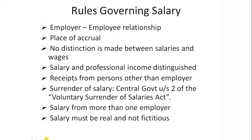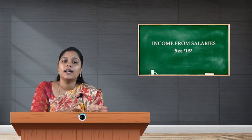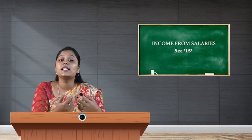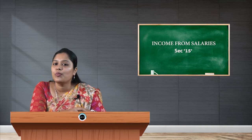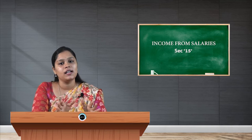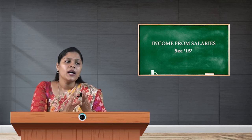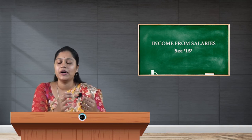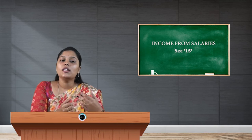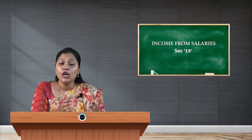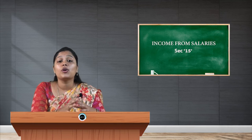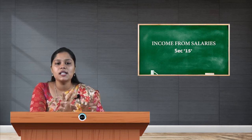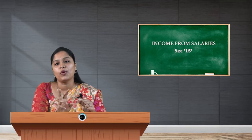The next rule is the distinction between salary and professional income. If any person earns income through their profession, that is called professional income and it is taxed under section 28. For example, income earned by a lawyer can be treated as professional income. On the other hand, if the lawyer is employed by a company and gives legal advice, all income earned by that person is considered as salary. So there is a difference between salary and professional income.